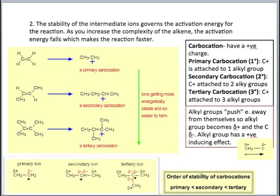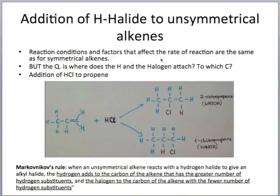The more you can spread the charge around, the more stable the ion becomes. Therefore, the order of stability is: tertiary is more stable than secondary, and secondary is more stable than primary. That is another reason why, as you get larger alkenes, the rate of reaction increases. Up to this point we have considered symmetrical alkenes, but let's now consider the addition of hydrogen halides to unsymmetrical alkenes. The reaction conditions and factors affecting the rate are the same as for symmetrical alkenes.